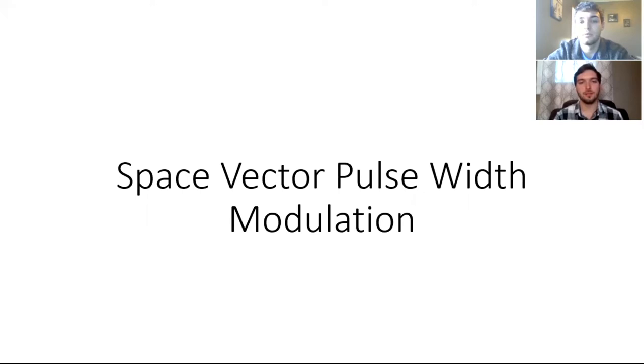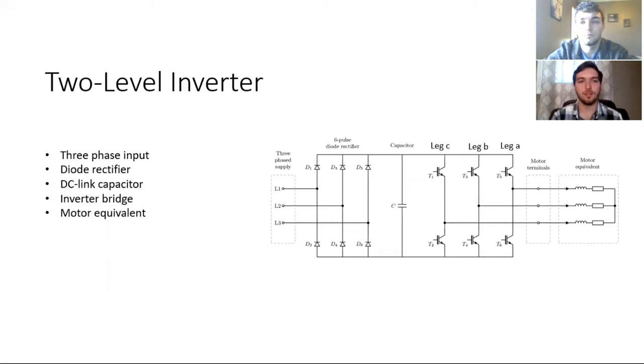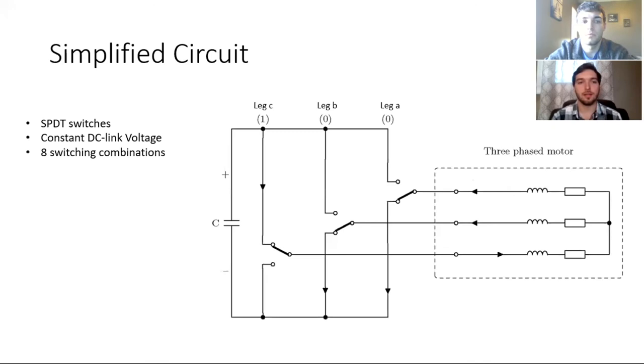Okay so I'll be speaking of the space vector pulse width modulation. Here I have a two-level inverter. It has a three-phase supply and a diode rectifier and then it also has a DC link capacitor and an inverting bridge and a motor equivalent.